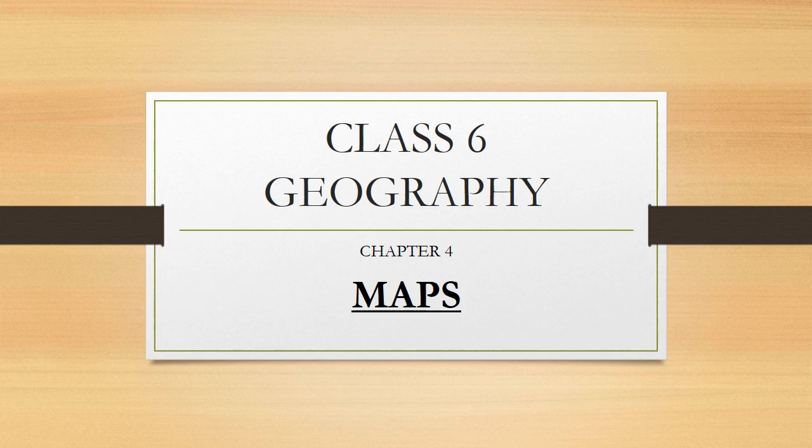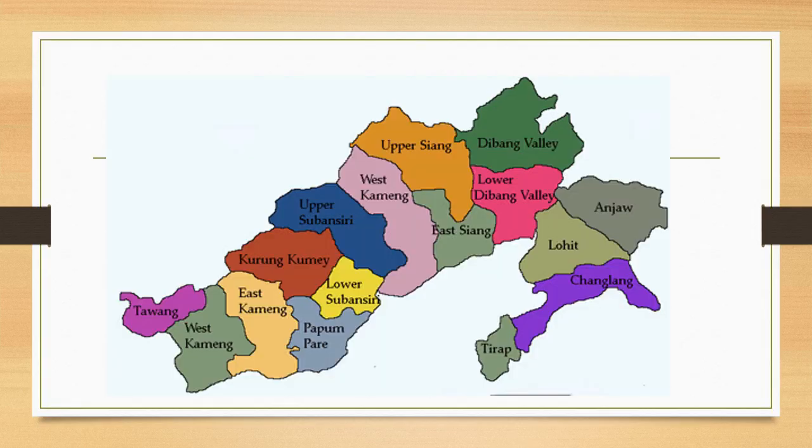Hi dear students, hope you all are doing well. Today we are going to study your fourth chapter in a geography textbook named Maps. In this slide you will be able to see the map of our state Arunachal Pradesh, where we can see pretty much every district here including Lower Subhan City, East Cumming, West Cumming, Tawang and so on. So this is a map where every district and place of a state is portrayed.